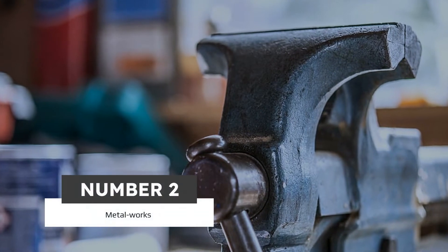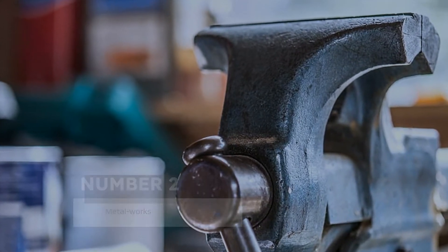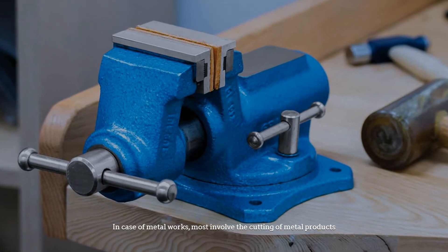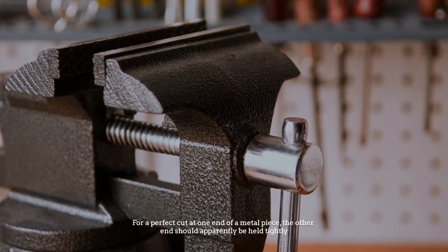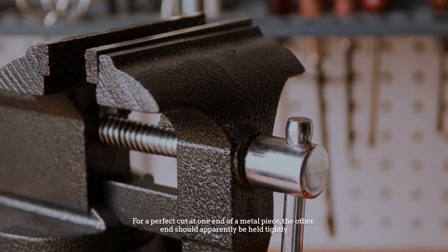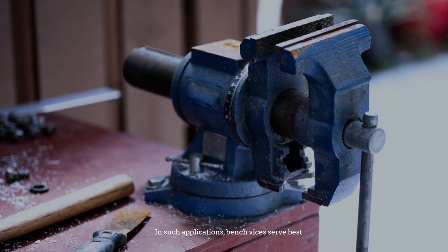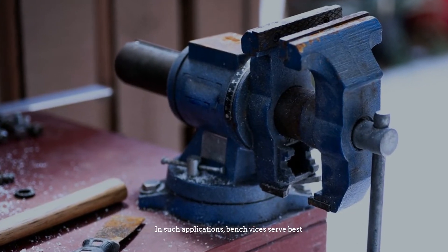Number 2. Metalworks. In case of metalworks, most involve the cutting of metal products. For a perfect cut at one end of a metal piece, the other end should apparently be held tightly. In such applications, bench vices serve best.